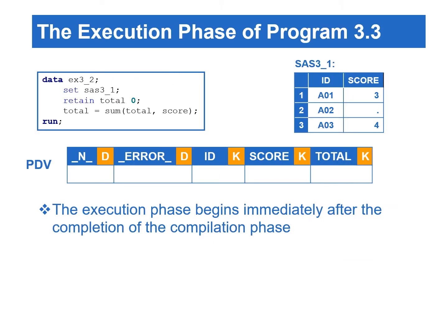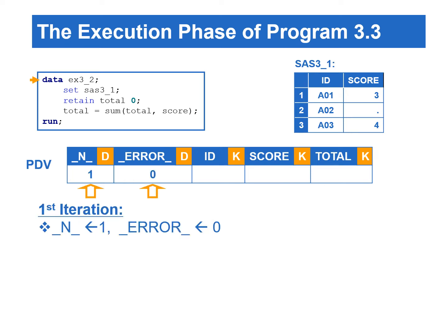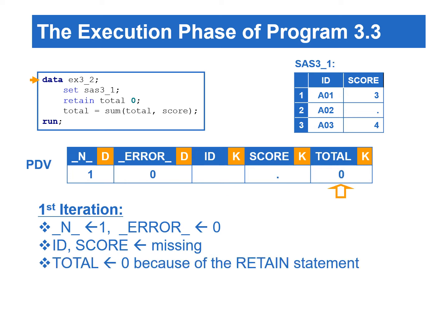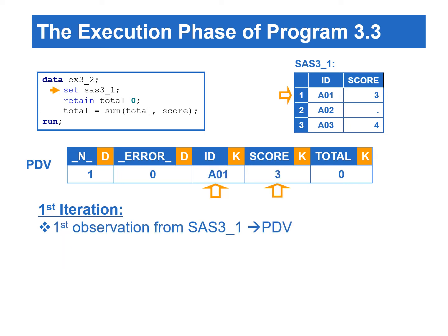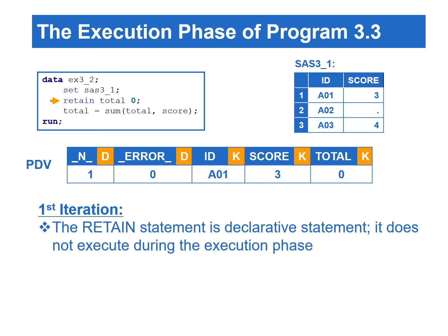This program uses the retain statement to create the total variable. Let's go over the execution phase of this program to better understand the retain statement. The execution phase begins immediately after the completion of the compilation phase. At the beginning of the execution phase, _N_ is set to one and _ERROR_ is set to zero in the PDV. The variables ID and score are set to missing. The variable total is initialized to zero because of the retain statement. If we do not use the retain statement to initialize total to zero, total will be set to missing at the beginning of the execution phase. The retain statement is a declarative statement — it does not execute during the execution phase.